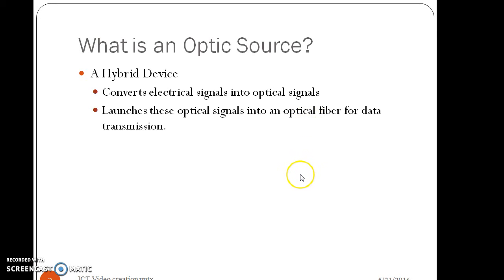What is an optical source? Optical source is a hybrid device which converts electrical signal into optical signal. It also launches an optical signal into optical fiber for signal transmission.